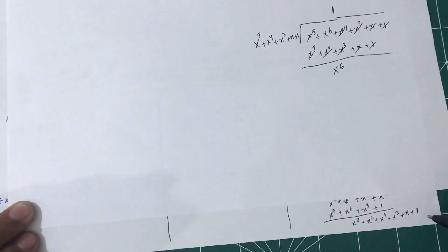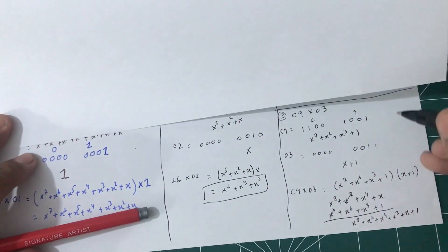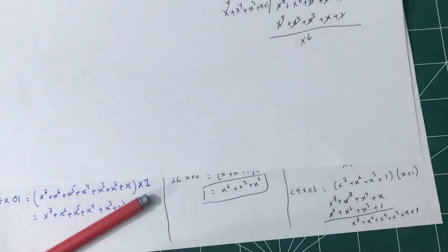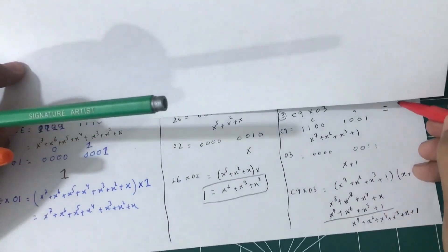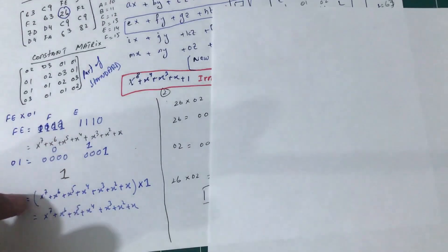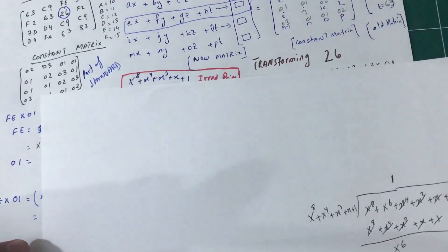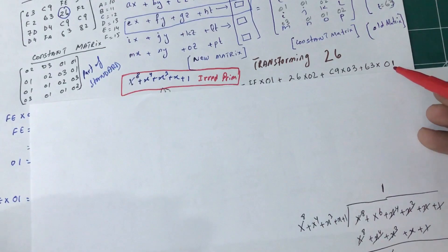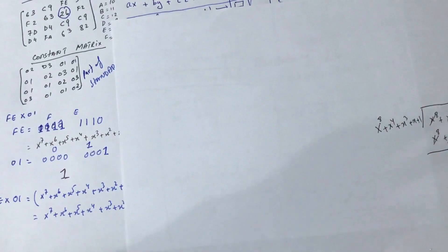So right here, when I multiply them together and apply the irreducible prime, this turns out to be x to the 6. So this will be 1 × x to the 6. Now I have one more thing to do — from here I need to multiply 63 by 01 as well, so I'm going to do the fourth one here.